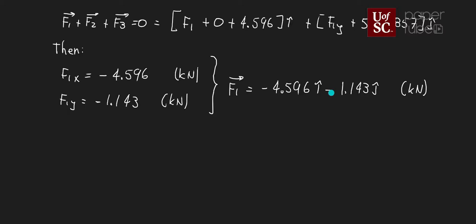So the problem is asking for my magnitude. My magnitude of F1 is going to be equal to the square root of 4.596 squared plus 1.143 squared, and that will give me 4.74 with three significant digits. That's going to be one of my answers.